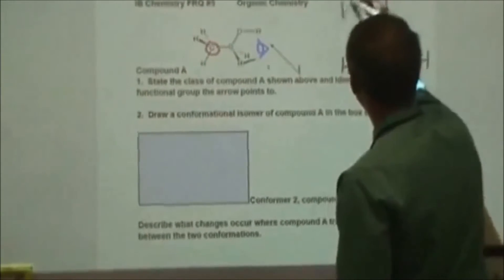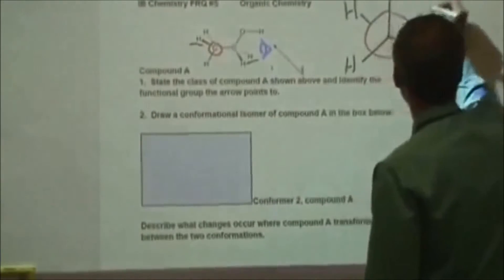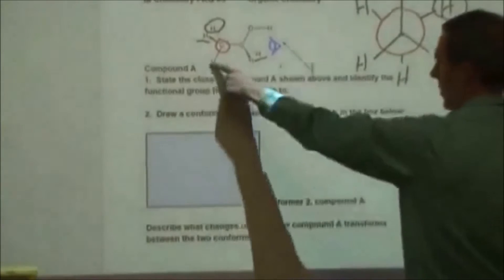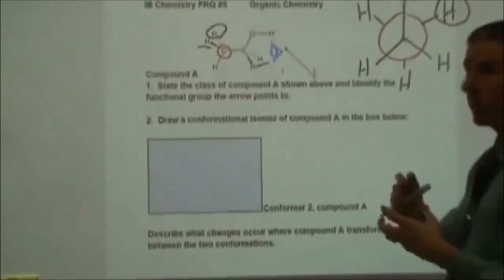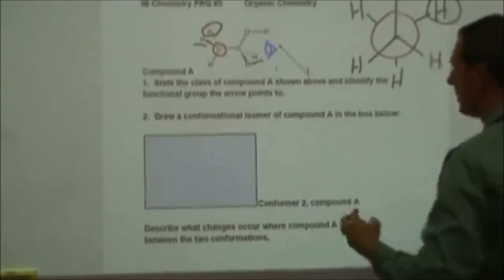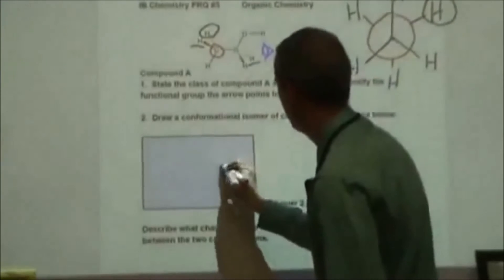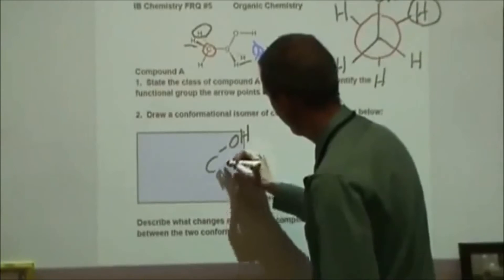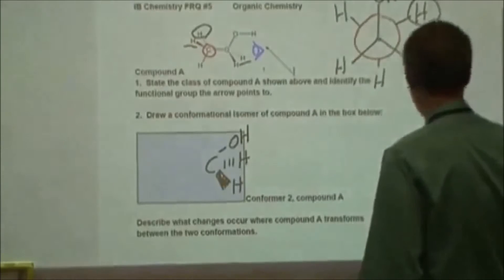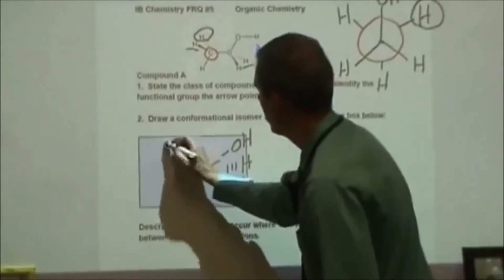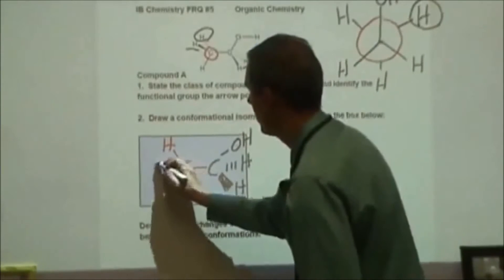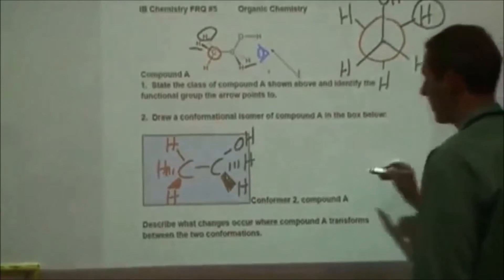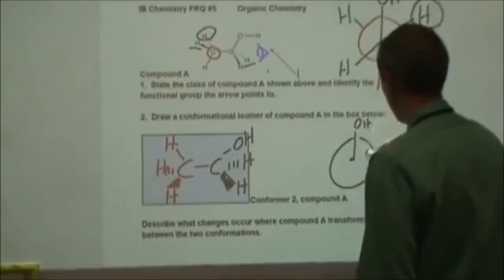On the other side, we have a staggered conformation — a hydrogen coming out to this side, one behind the board so from my eye's perspective it'd be off to my right, and one more coming straight down. A conformational isomer is the same molecule, just rotated about one of its bonds. I'm going to keep the front carbon the same but rotate the back carbon so that a hydrogen is in line with the hydroxyl group, another hydrogen in line with the other hydrogen, and another hydrogen there. We're going from a staggered conformation where everything is 60 degrees apart to an eclipsed one where everything is in line.